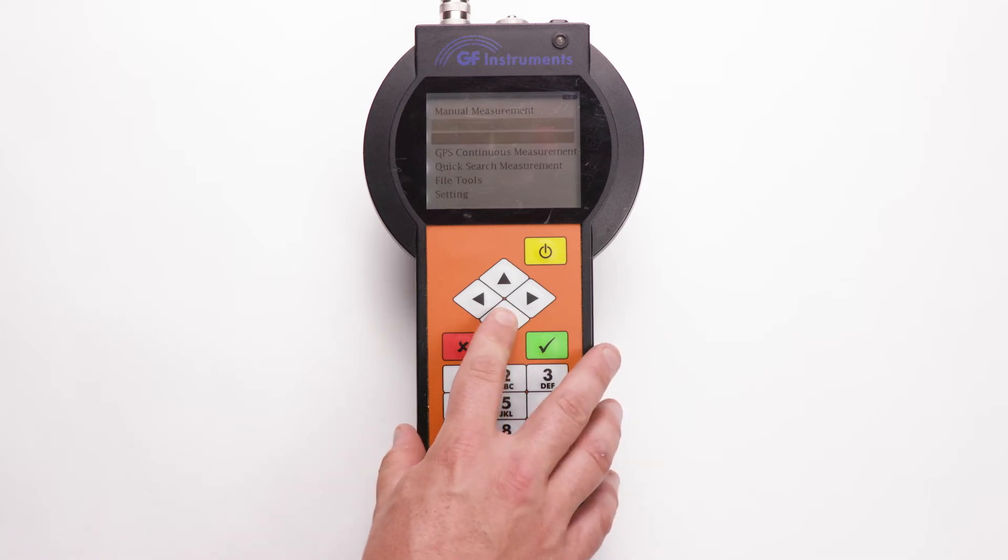GPS Manual Measurement. No grid needs established prior to starting this survey. The user starts measurement at each point by pressing the key buttons. The measurement position is determined by the position of the GPS receiver. GPS Continuous Measurement. No grid needs established prior to starting this survey. Data are measured and saved continuously in a specified measuring period. The measurement position is determined by the position of the GPS receiver.